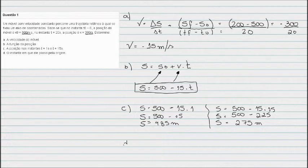Por fim a letra D questiona para a gente o instante em que ele passa pela origem. O que é passar pela origem? Origem significa posição igual a 0. Ele está passando exatamente onde eu estou medindo. Vou copiar aqui a função posição: menos 15T.